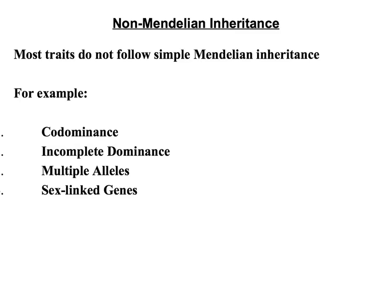Non-Mendelian inheritance refers to the fact that most traits do not follow simple Mendelian inheritance. Remember, Mendel had those either-or traits — very straightforward and simple. A lot of traits don't work that way. For example, there are traits that follow rules of co-dominance, incomplete dominance, multiple alleles, or sex-linked genes.